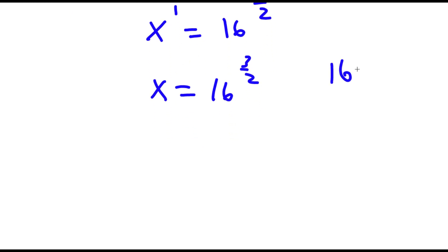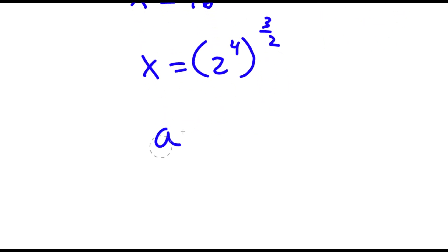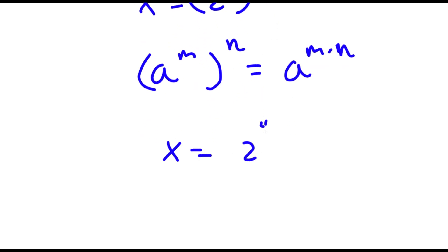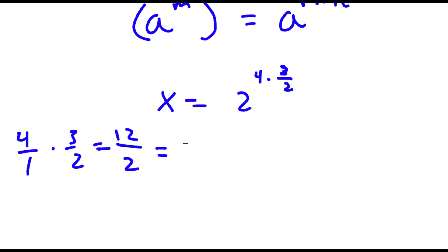Now to simplify this — 16 is the same thing as 2 to the power of 4. So I have x is equal to 2 to the power of 4 to the power of 3 over 2. Again, a to the power of m to the power of n equals a to the power of m times n. So 2 to the power of 4 to the power of 3 over 2 equals 2 to the power of 4 times 3 over 2. Now 4 times 3 over 2 is 4 over 1 times 3 over 2 — 4 times 3 is 12, 1 times 2 is 2, so 12 over 2, which equals 6.